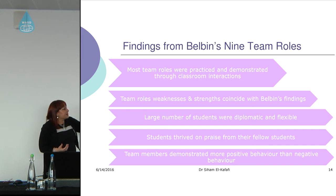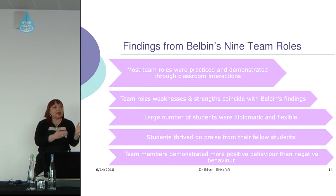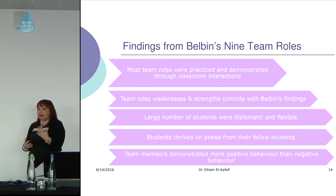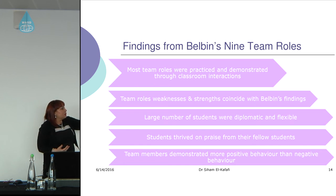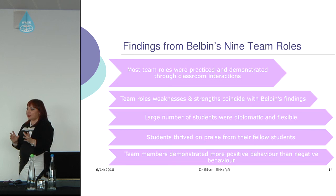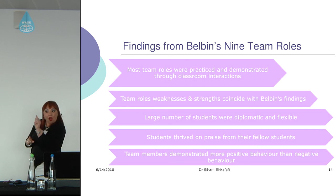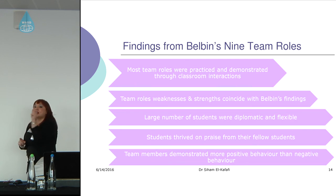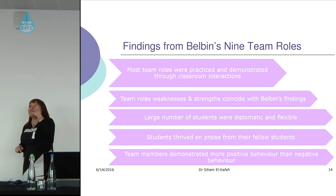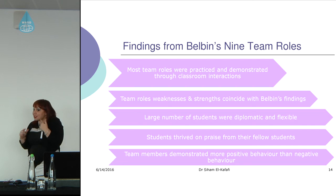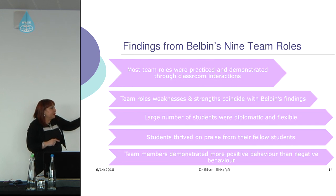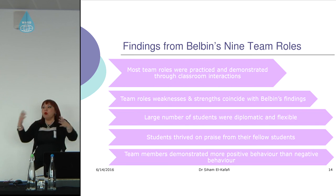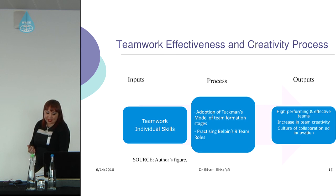The team roles' weaknesses and strengths that Belbin described, I actually saw happening in real life. A large number of students were democratic and flexible with each other, but at the same time they hated any criticism — which coincides exactly with what Belbin said about the Plant role, a person who puts forward ideas and strategies. The team members demonstrated more positive behavior than negative behavior overall.